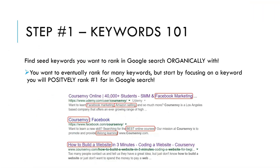that's why I say master keyword research so you can rank for those long tail keywords organically. So step number one is finding seed keywords you want to rank organically for in Google Search. You want to eventually rank for many keywords, but start by focusing on a keyword that you will positively rank number one for in Google Search.